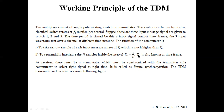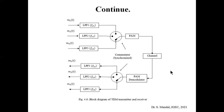At the receiver, there must be a commutator synchronized with the transmitter-side commutator to select the right signal at the right time — this is called frame synchronization. After PAM, the signal goes through the channel, then to a PAM demodulator at the receiver. Another commutator is used, synchronized with the transmitter, and different low-pass filters select the different message signals from the respective outputs.